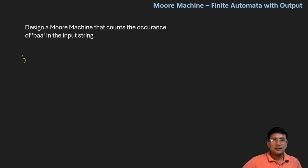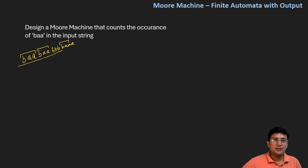The smallest string of the language containing BAA will be BAA. It can contain another BAA also, or it may contain something like BBB and then another BAA. So this is the first occurrence of BAA, this is the second occurrence, and this is the third occurrence. Corresponding to each occurrence, an output should be generated in the Moore machine. Now for forming the DFA, let's design the automata for the smallest string possible, that is BAA.